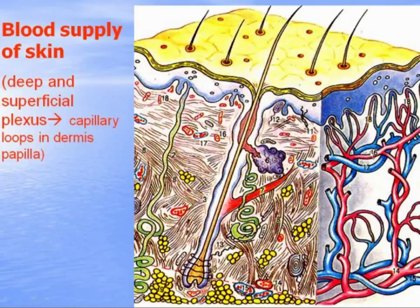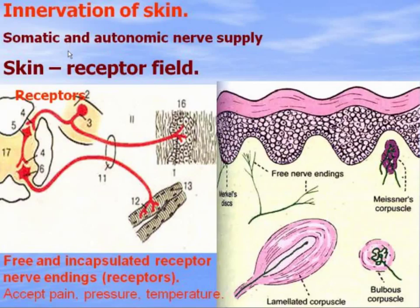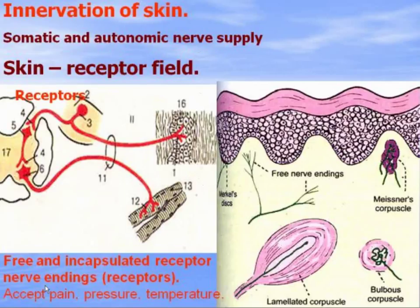Skin has well-developed blood supply with deep and superficial vascular plexuses, capillary loops in every dermal papilla. For innervation, there is both somatic and autonomic nerve supply. Skin is tremendously receptor-filled, with many receptors that initiate numerous reflex arches. Through the skin, the body communicates with the environment. There are free and encapsulated nerve endings accepting pain, pressure, temperature, and so on.